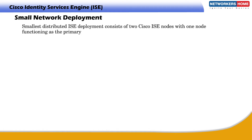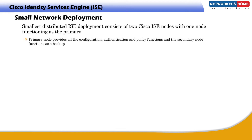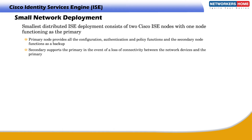The smallest distributed ISE deployment consists of two Cisco ISE nodes, with one node functioning as the primary. The primary node provides all the configuration, authentication, and policy functions, and the secondary node functions as a backup. The secondary supports the primary in the event of a loss of connectivity between the network devices and the primary.